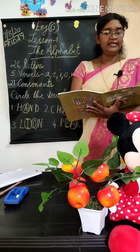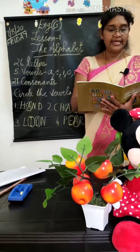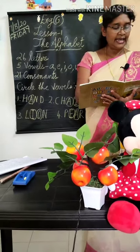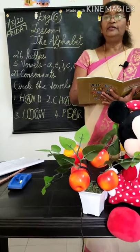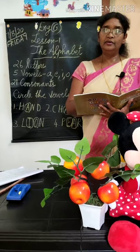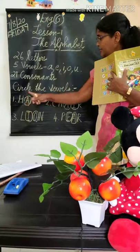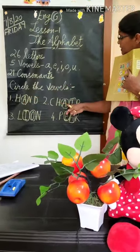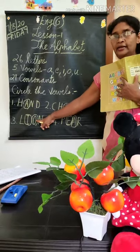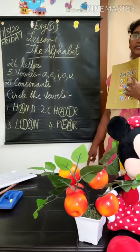First word is HAND. Second word is CHAIR. Third one is LION. And fourth one is PEAR. Once more look at the board: Hand, Chair, Lion, Pair.